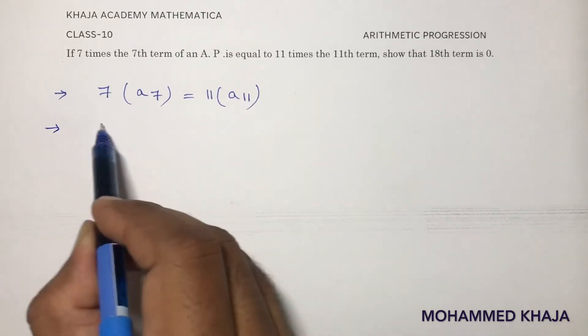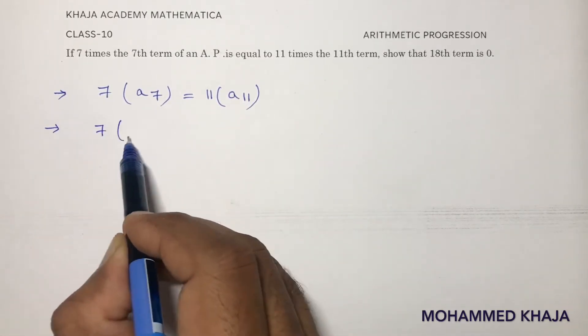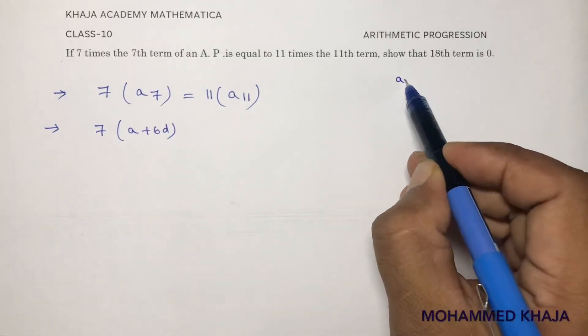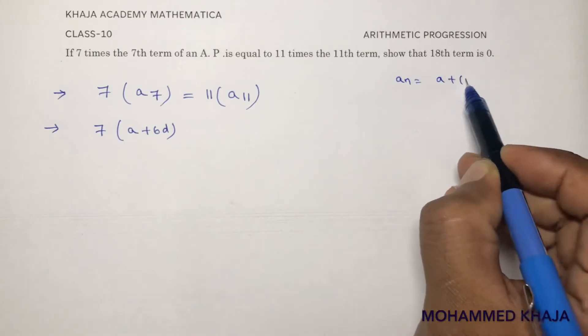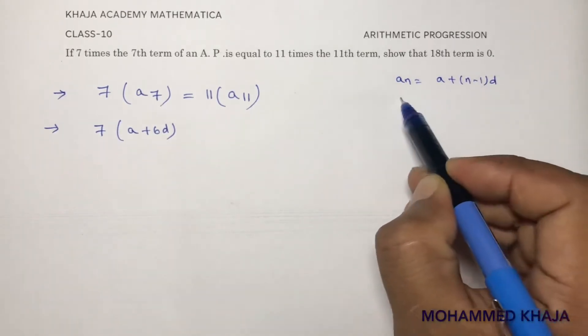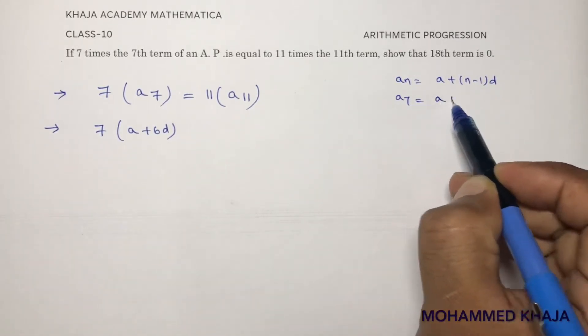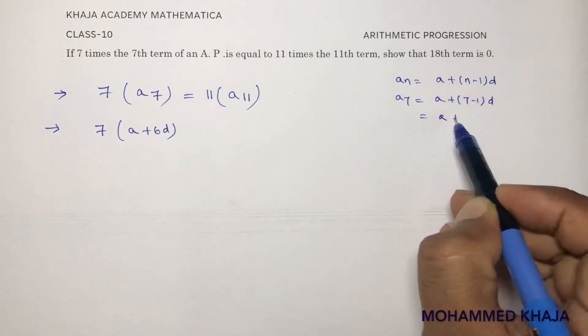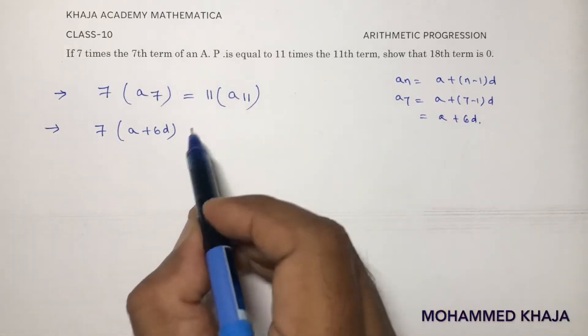Now here, 7 times the 7th term of an AP is a plus 6d because the nth term formula is a plus n minus 1 into d. a7 will be a plus 7 minus 1 into d, which is a plus 6d.